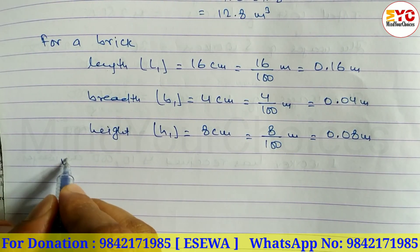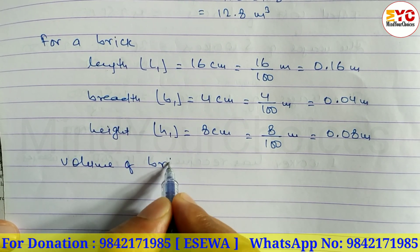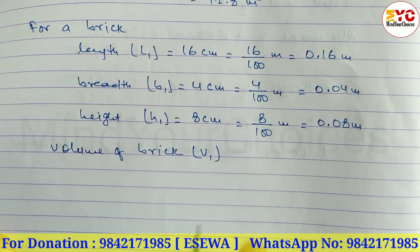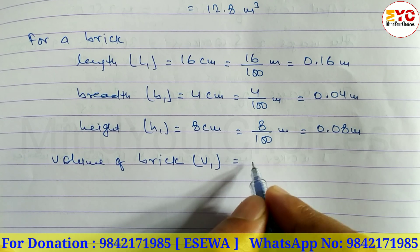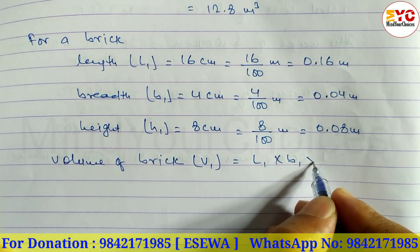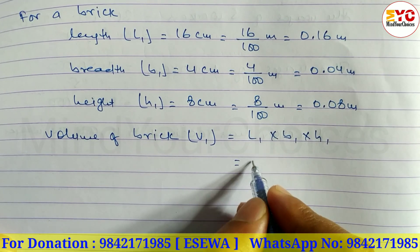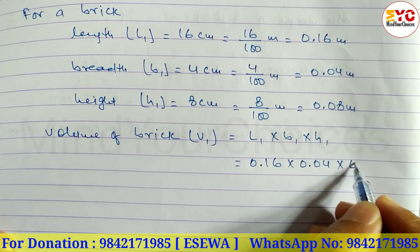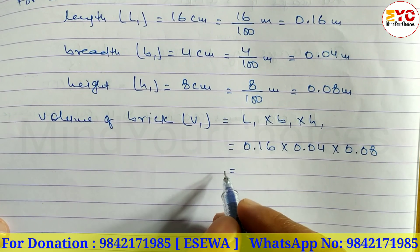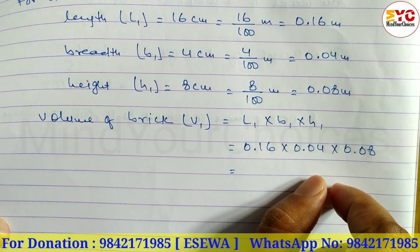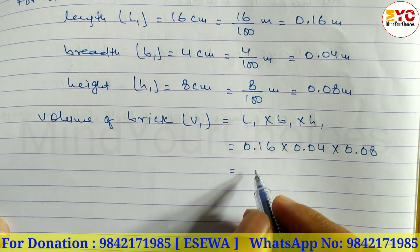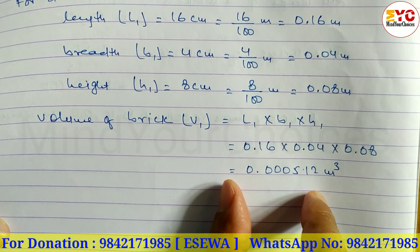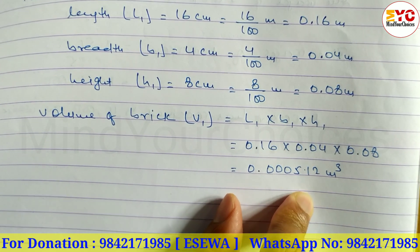Now we have to find the volume of the brick. Volume of brick V1 = L1 × B1 × H1 = 0.16 × 0.04 × 0.08. Let's multiply this and we get 0.000512 meter cube. Calculate yourself and check it.